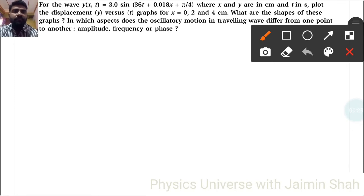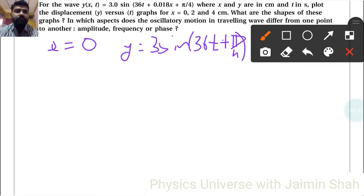First of all, when x equals 0, we have y = 3sin(36t + π/4). That's the equation we are left with.